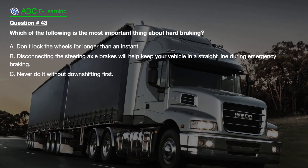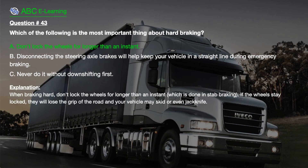Question number 43. Which of the following is the most important thing about hard braking? A. Don't lock the wheels for longer than an instant. B. Disconnecting the steering axle brakes will help keep your vehicle in a straight line during emergency braking. C. Never do it without downshifting first. The correct answer is A. Don't lock the wheels for longer than an instant. Explanation: When braking hard, don't lock the wheels for longer than an instant, which is done in stab braking. If the wheels stay locked, they will lose the grip of the road and your vehicle may skid or even jackknife.